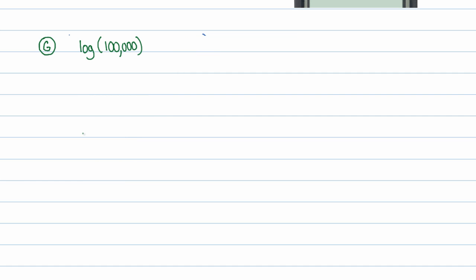Continuing with our evaluation examples, let's look at what log of 100,000 is. You can do this by hand — just rewrite it as a power of 10. Count the zeros: 1, 2, 3, 4, 5 — that's 10 to the fifth power. If there's no base written, assume it's log base 10. So that's log base 10 of 10 to the fifth power, which turns into 5.